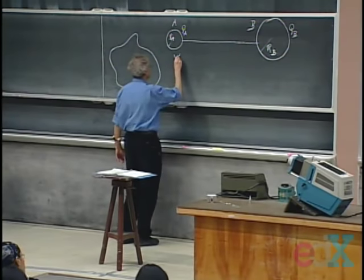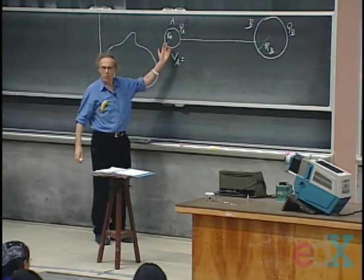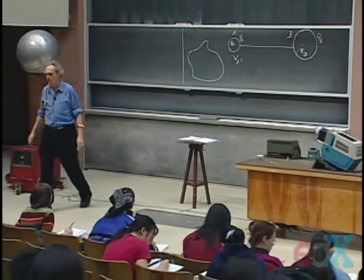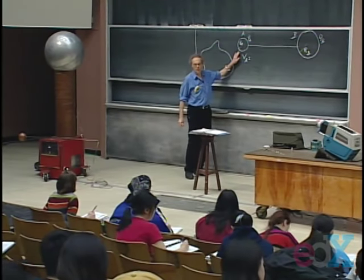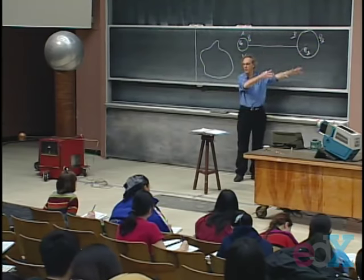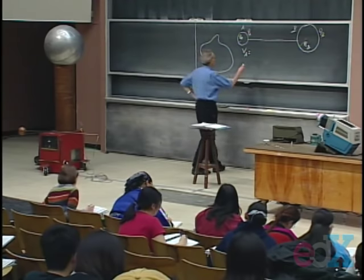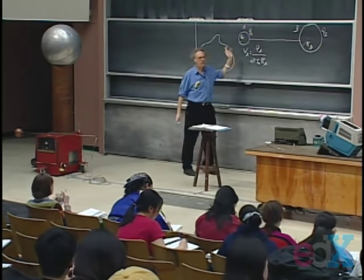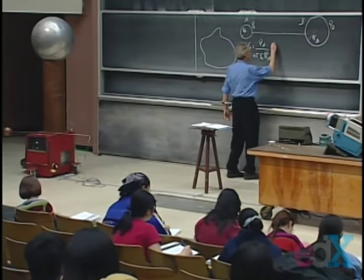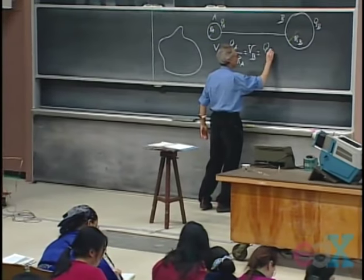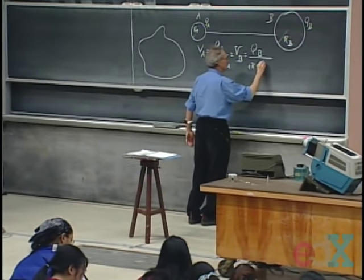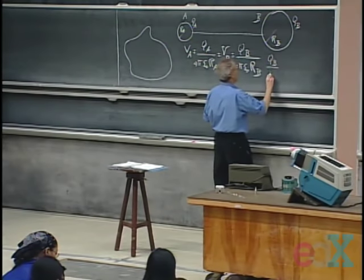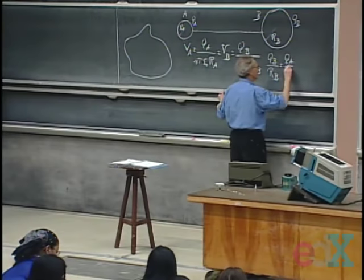The potential of A is about the same as it would be if B were not there, because B is so far away. The work to bring charge from infinity to A per unit charge is independent of whether B is there. So the potential of A is the charge on A divided by 4πε₀ times the radius of A. Since this is an equipotential, this must also be the potential of sphere B, which is the charge on B divided by 4πε₀ R_B. So immediately, Q_B divided by R_B equals Q_A divided by R_A.